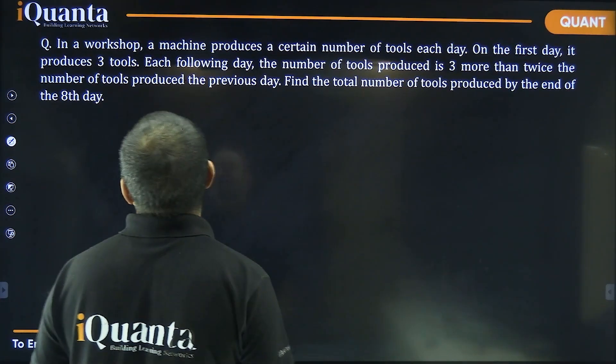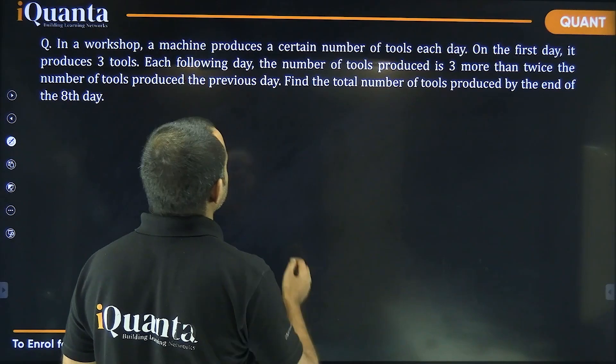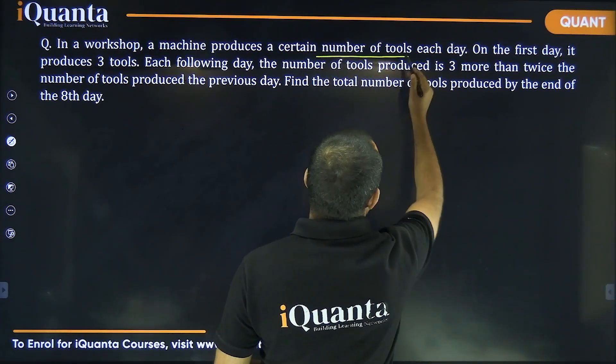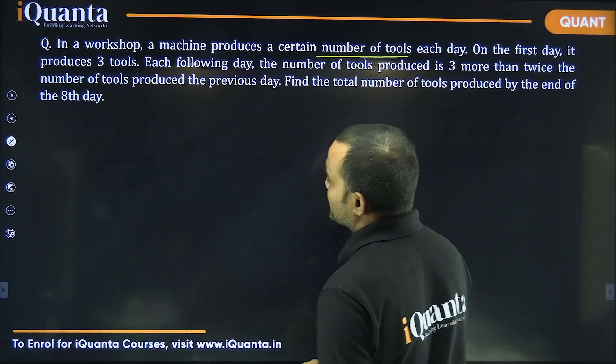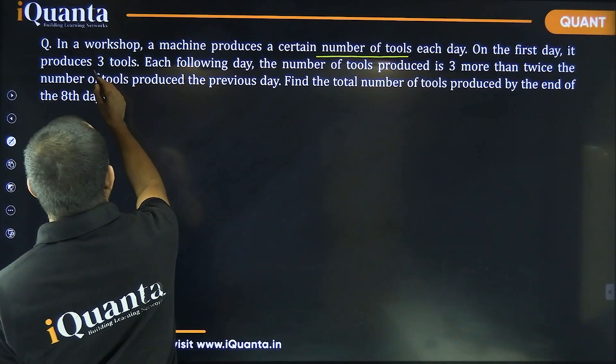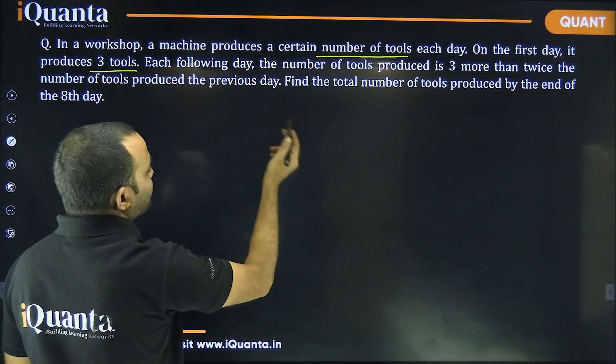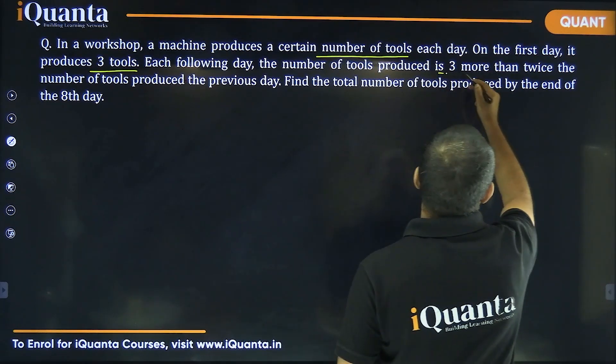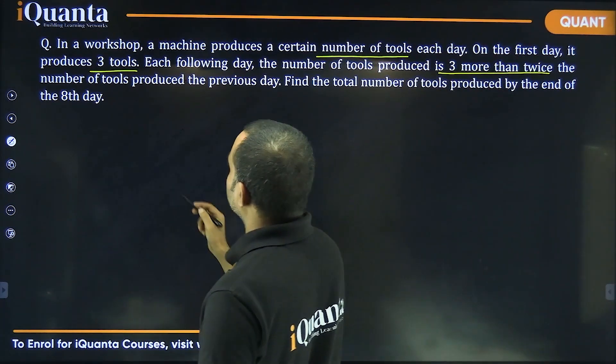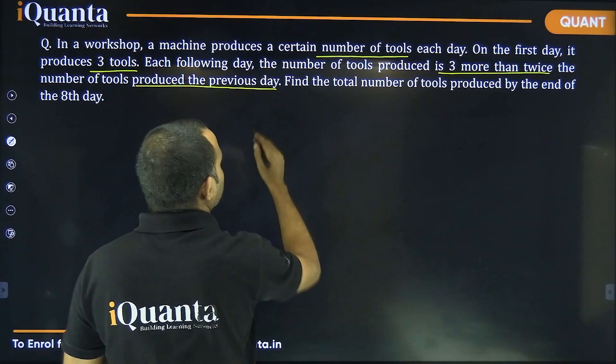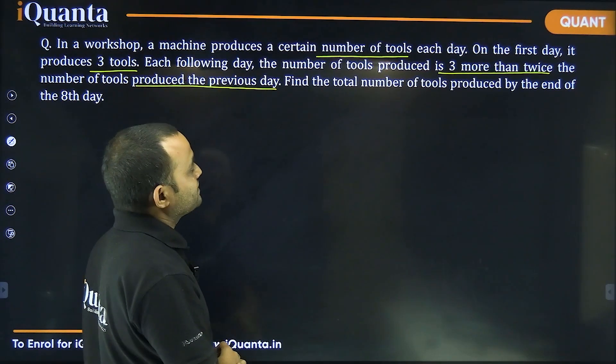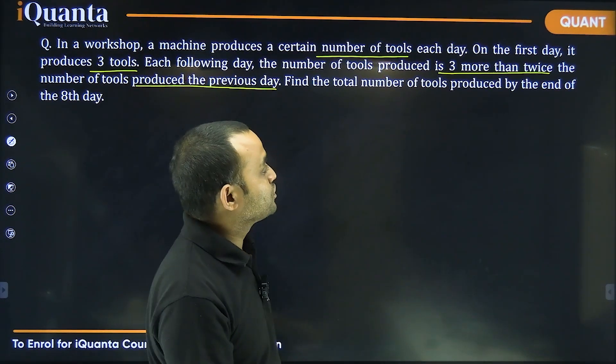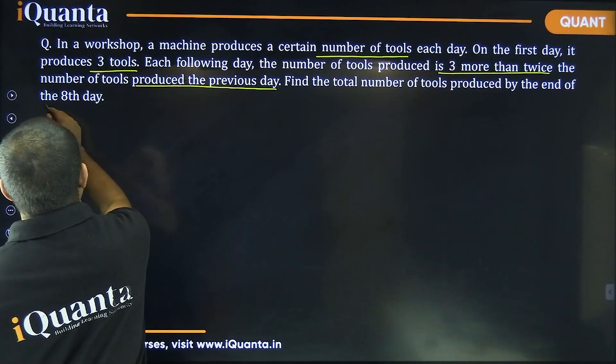This question says, in a workshop, a machine produces a certain number of tools each day. On the first day, it produces three tools. Each following day, the number of tools produced is three more than twice the number of tools produced the previous day. Find the total number of tools produced by the end of the eighth day.